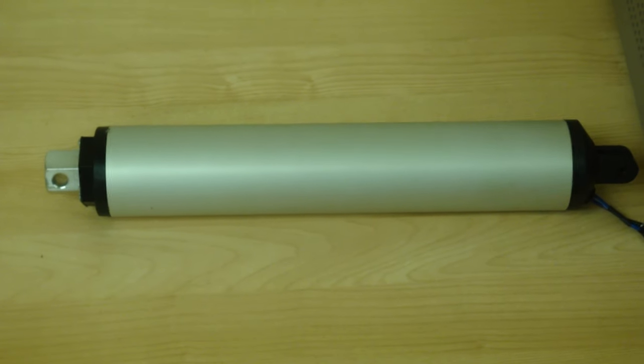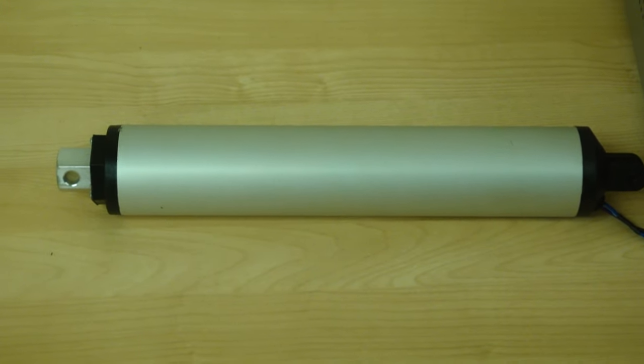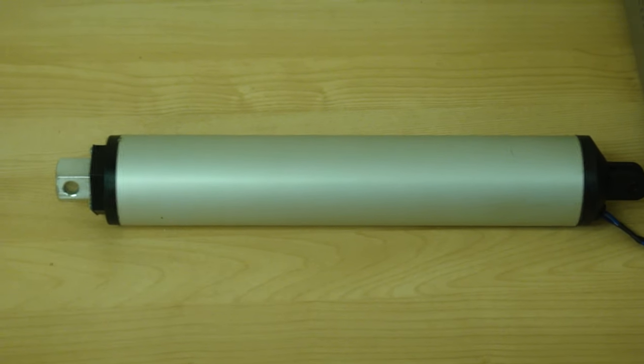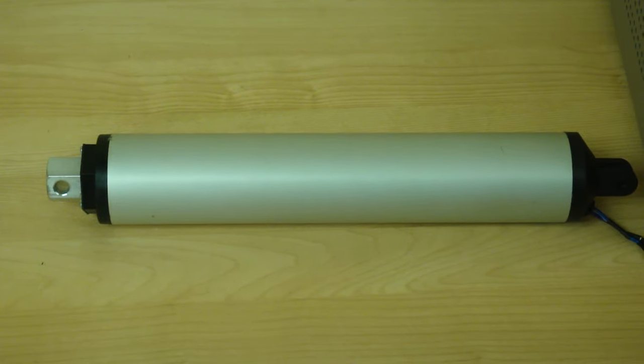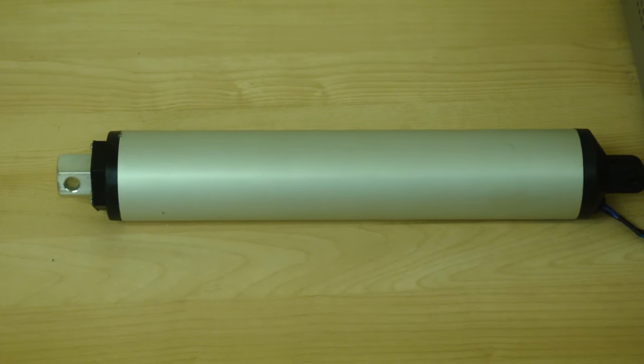This is a new unit we've added here at Progressive Automations. This is our high speed tubular actuators. The one we're going to use for an example here is 9 inches per second at a force of 22 pounds with a 4 inch stroke.